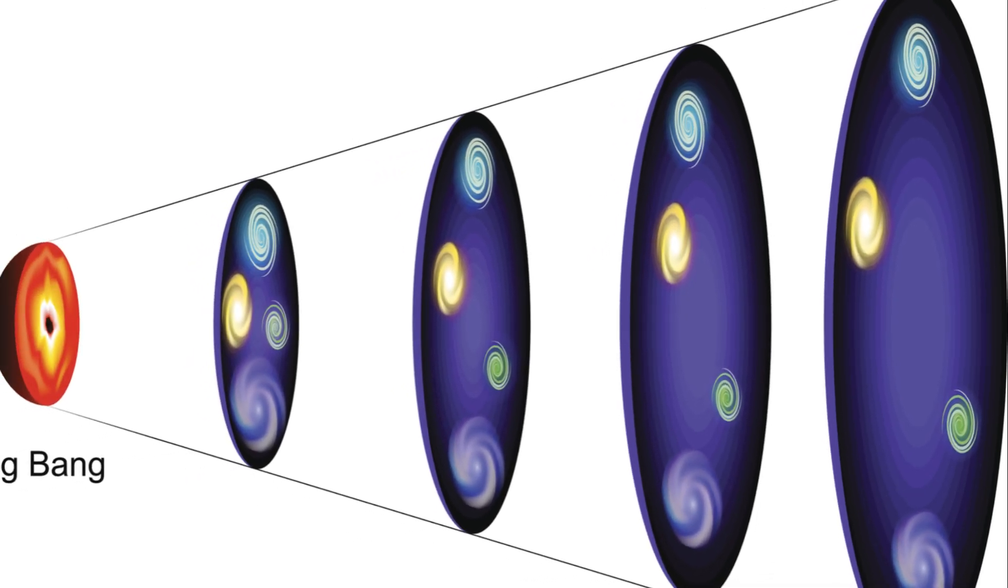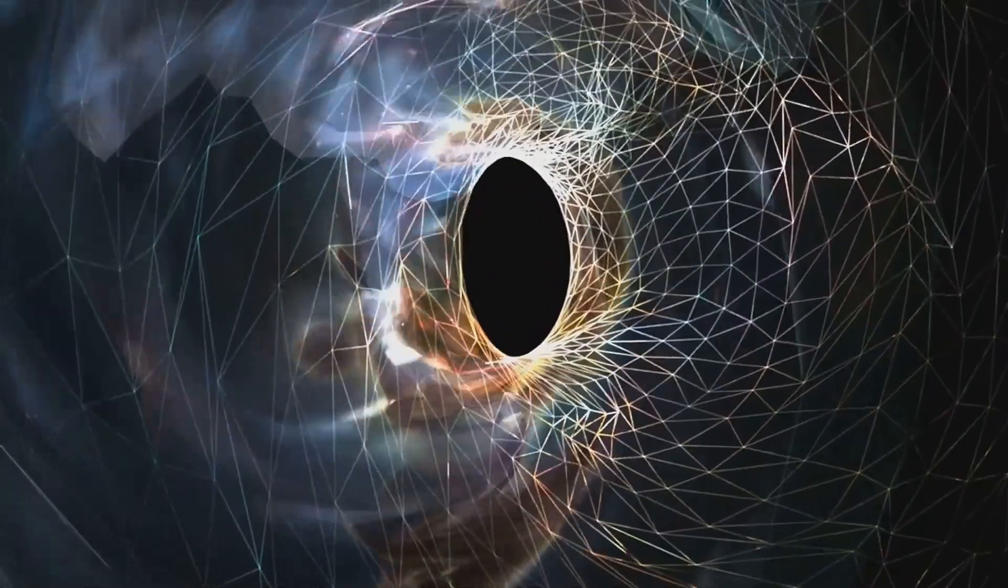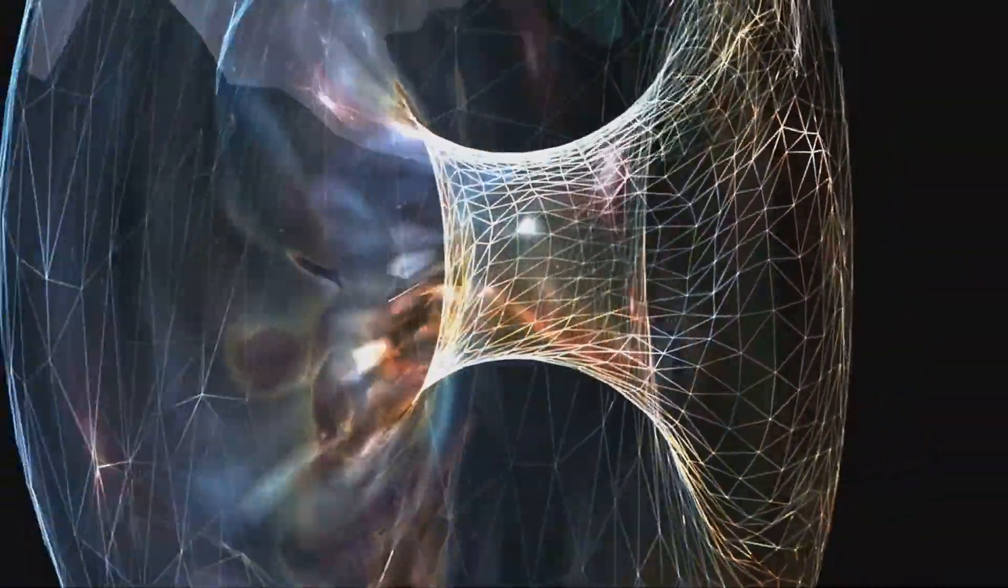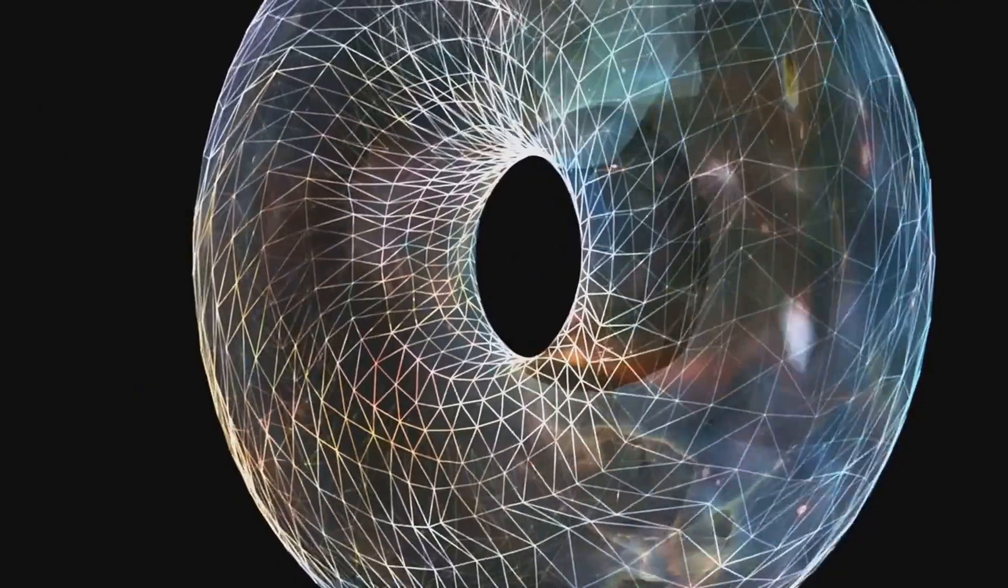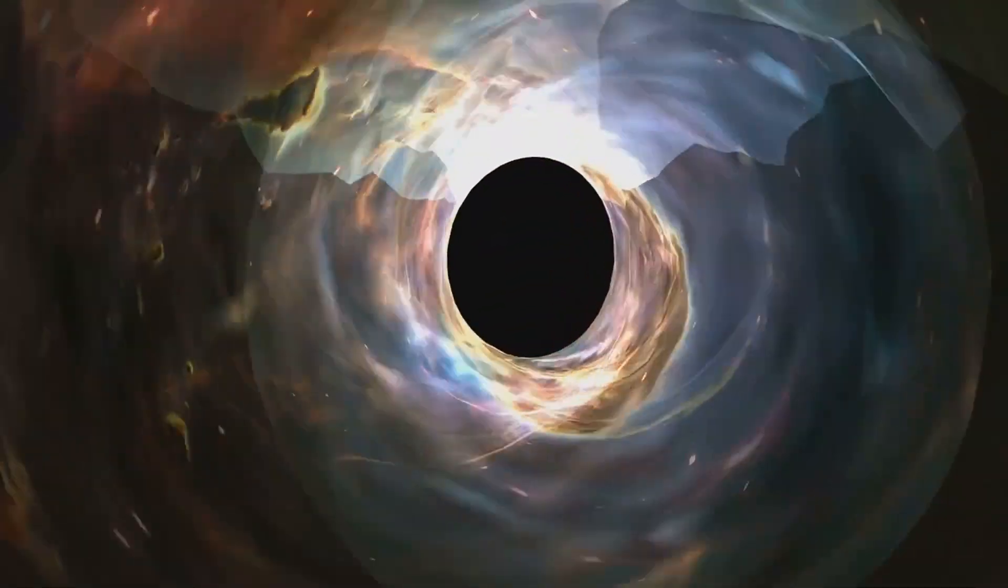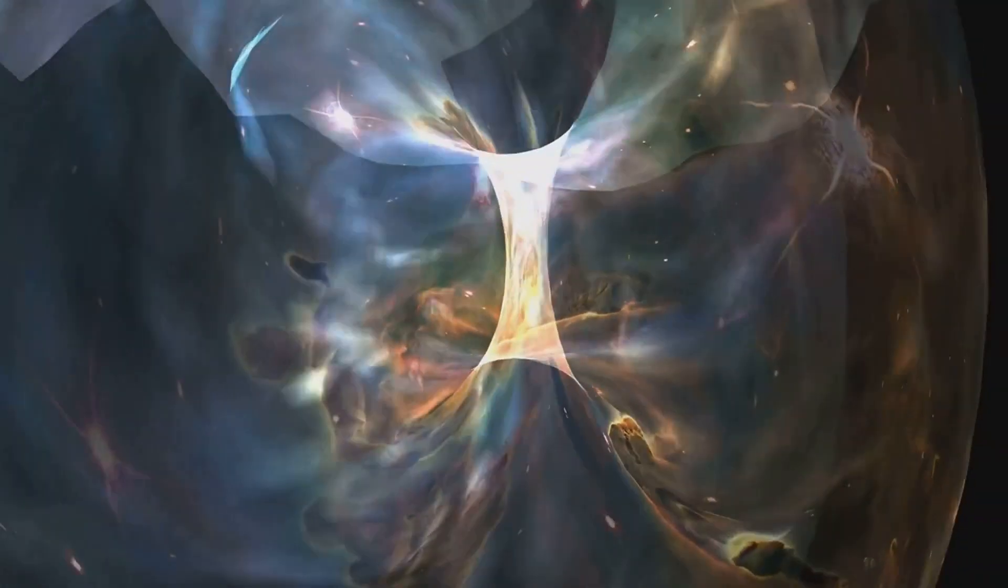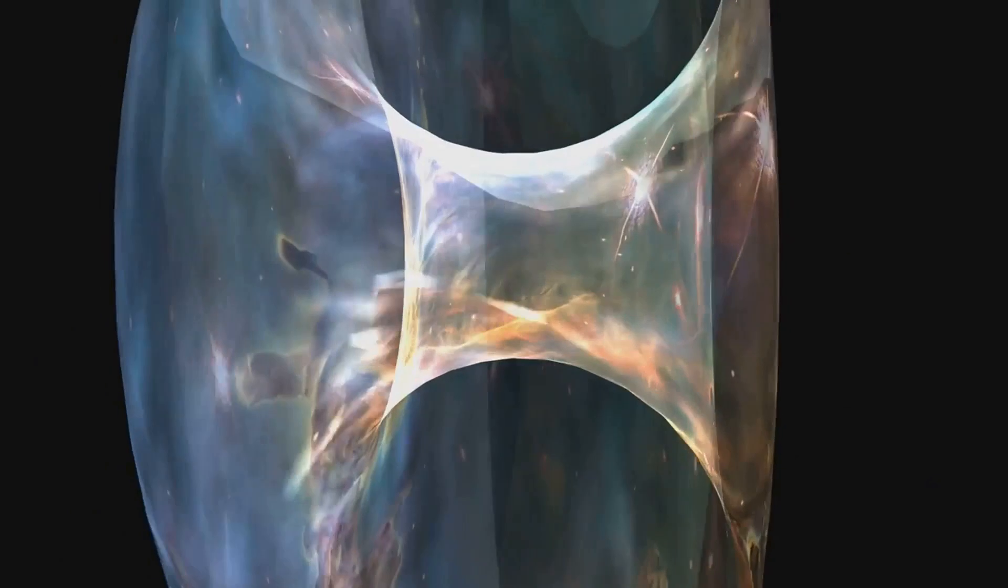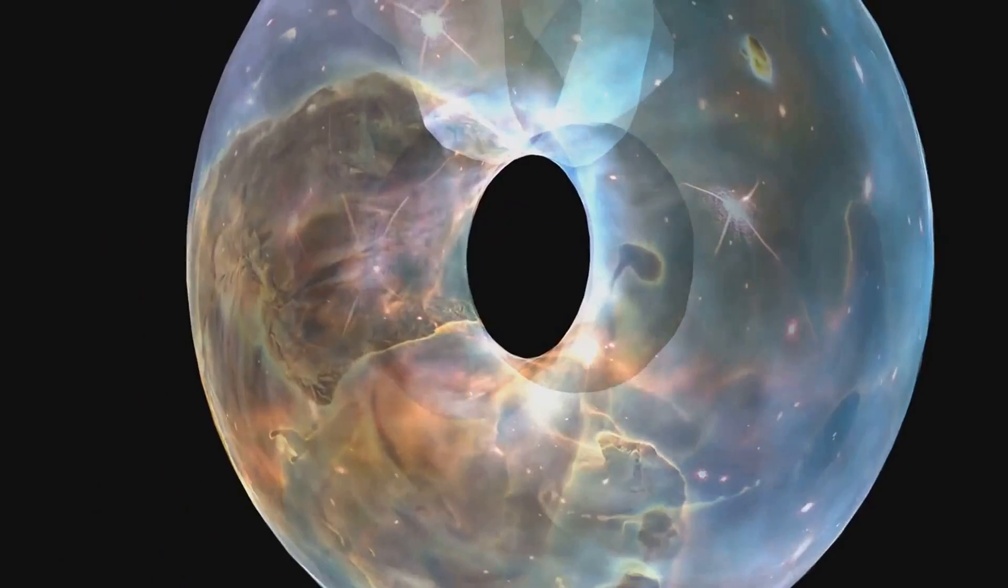Let's start with the Big Crunch. This theory suggests that the universe, which is currently expanding, will eventually slow down and start to contract. Like a rubber band that's been stretched too far, it will snap back, causing everything to collapse in on itself. This could lead to another Big Bang, restarting the cosmic cycle anew. However, this theory is contingent upon the idea that the universe has enough mass to reverse its expansion, a notion that is becoming increasingly disputed.